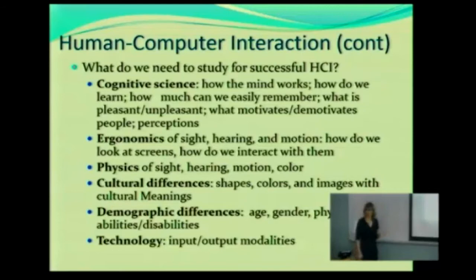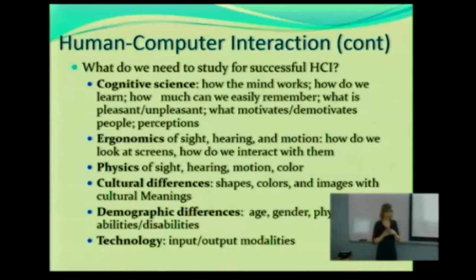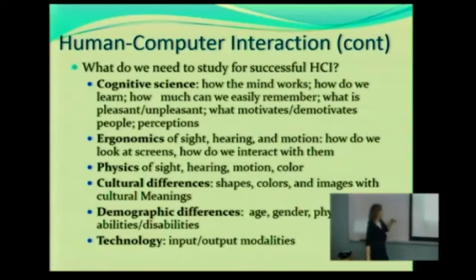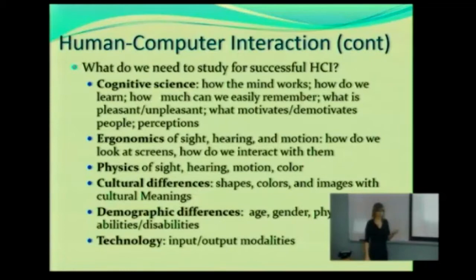Cognitive science — who's heard of cognitive science? Cognitive science is really a study that brings together psychology, particularly cognitive psychology, and computing. It's really understanding how the mind works — things such as how we learn, how much we can easily remember, because we do have certain limits in short-term memory for example. What do we find pleasant and unpleasant? That's actually a pretty big determinant of success for many products. Are you going to use something you don't like? No.